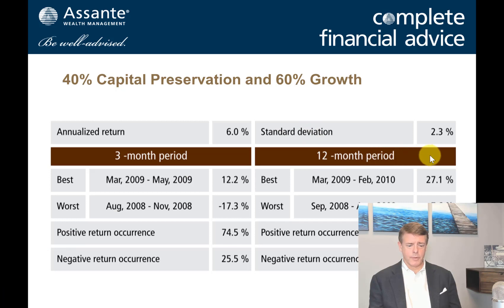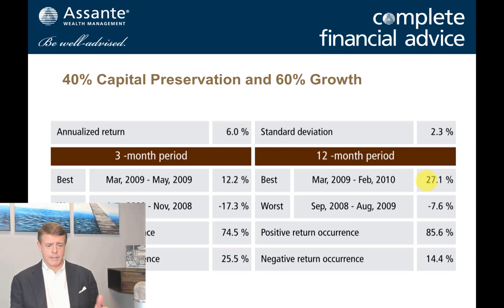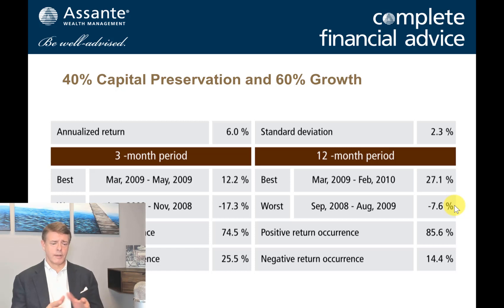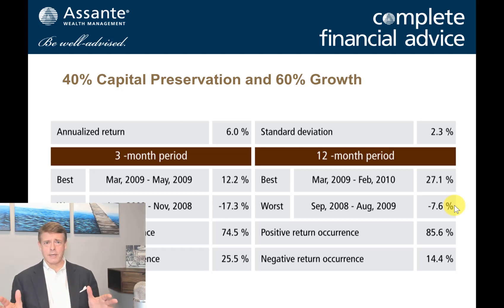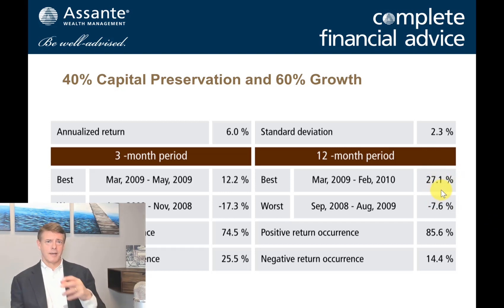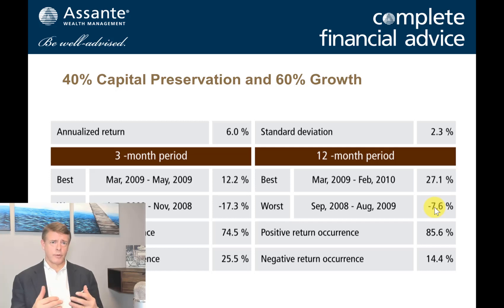If I look at the 12-month periods, the best 12-month period over the 10-year period to end of 2017 was 27% to the good, and the worst was minus 7.6%. What's interesting about this — if you go back to our previous video on asset mix, I alluded to the Vanguard and Morningstar study that looked at long-term performance numbers of various investment mixes from 1901 onwards. These numbers actually show up pretty much in line with the performance of those various mixes.